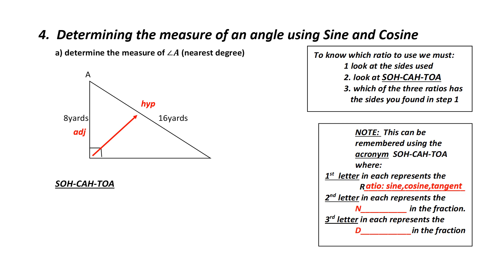That's where SOH-CAH-TOA comes in. In SOH-CAH-TOA, each set of three letters represents a different ratio. The first letter in each set represents the ratio: S stands for sine, C stands for cosine, T stands for tangent. The second letter in each represents the numerator in the fraction, and the third represents the denominator.